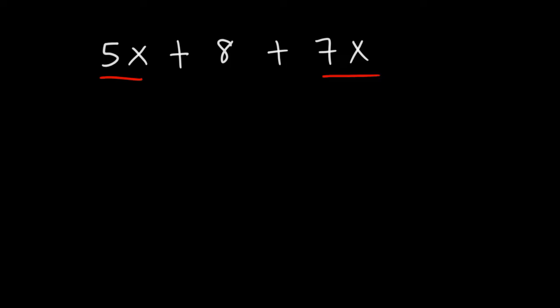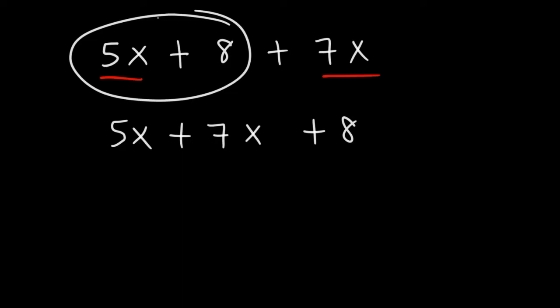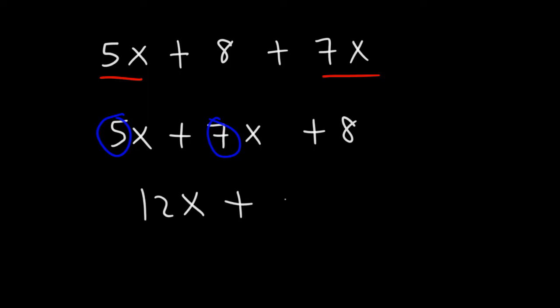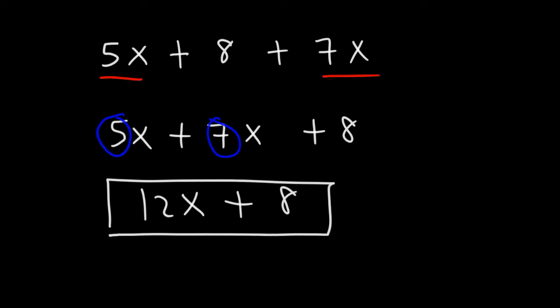5x and 7x are like terms, so let's rearrange to put them next to each other. You can't add 5x with 8 because they're not like terms — the 8 doesn't have the same variable, so you can't say it's 13 or 13x. These two are like terms because they have the same variable x, so we add their coefficients. 5x plus 7x is 12x, giving a final answer of 12x plus 8.